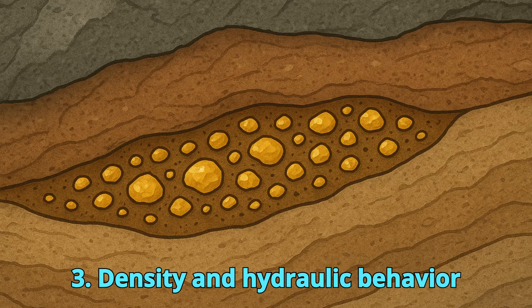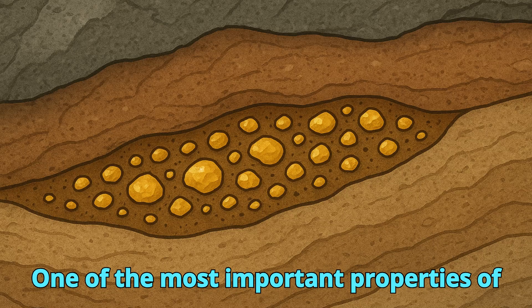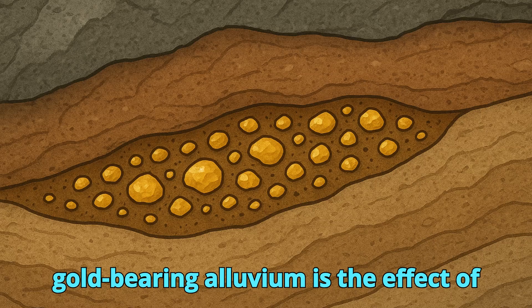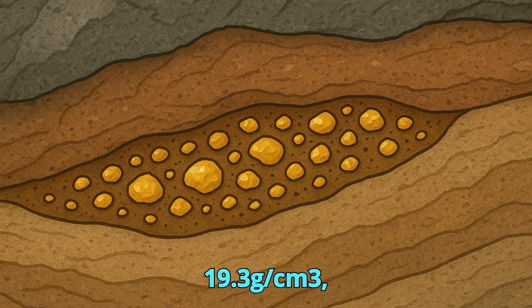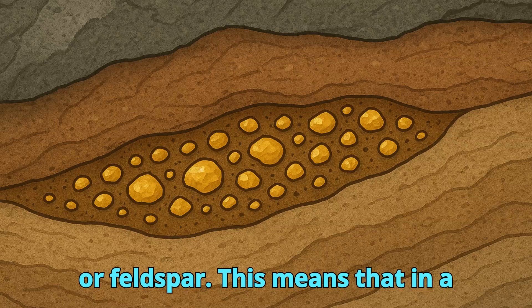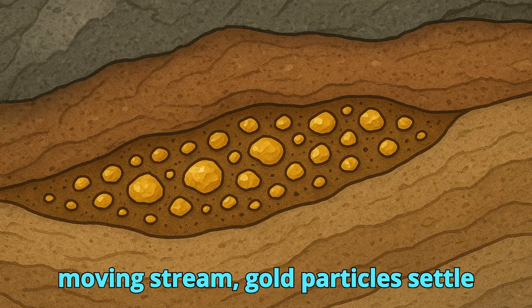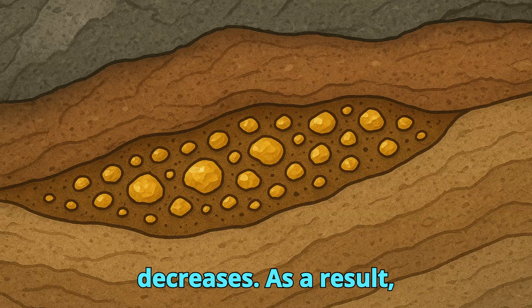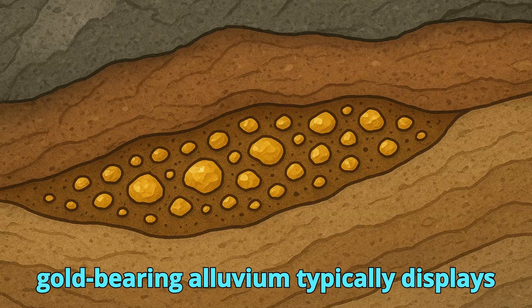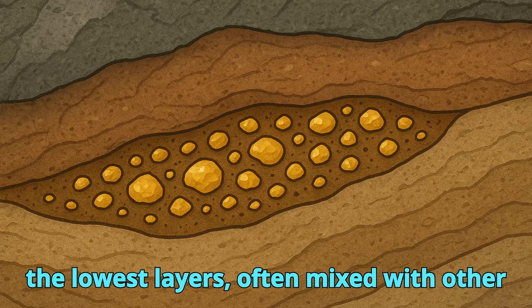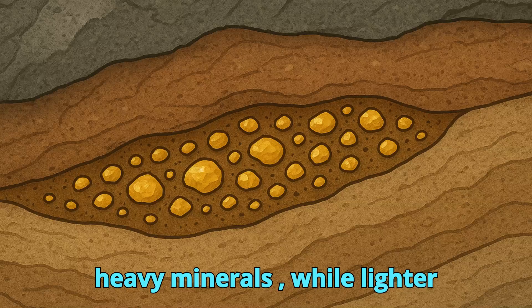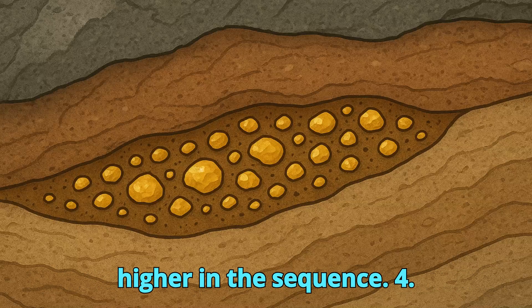3. Density and Hydraulic Behavior. One of the most important properties of gold-bearing alluvium is the effect of density sorting. Gold has a density of about 19.3 g/cm³, much higher than quartz at 2.65 g/cm³ or feldspar. This means that in a moving stream, gold particles settle quickly whenever water velocity decreases. As a result, gold-bearing alluvium typically displays stratification, with gold concentrated in the lowest layers, often mixed with other heavy minerals and black sands, while lighter minerals like quartz and feldspar remain higher in the sequence.